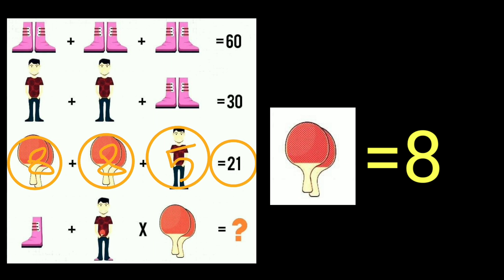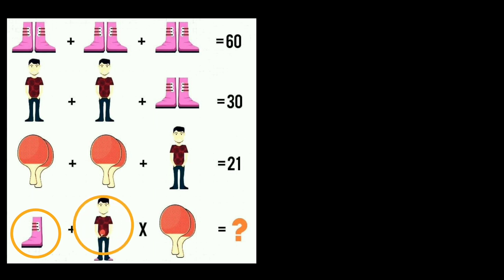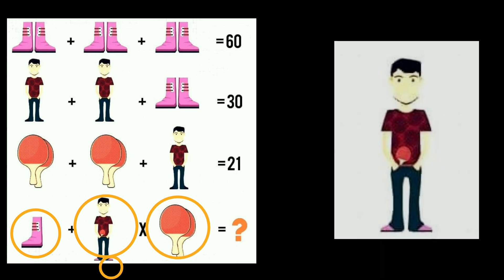Finally, last equation. Now look at here. Here is one shoe, not a pair of shoes. Here is one boy. Look at this boy properly who is carrying badminton and wearing shoes also. And here a pair of badminton.